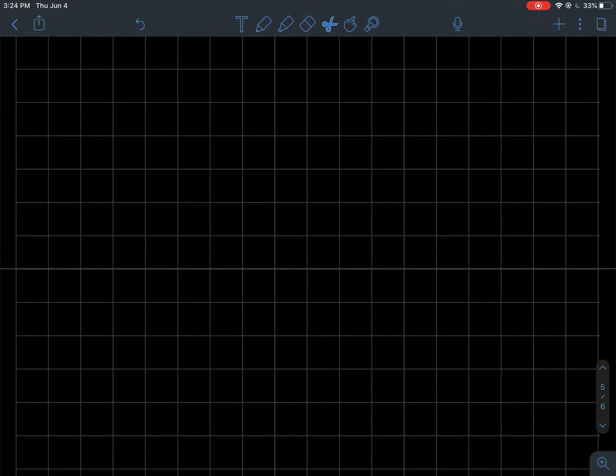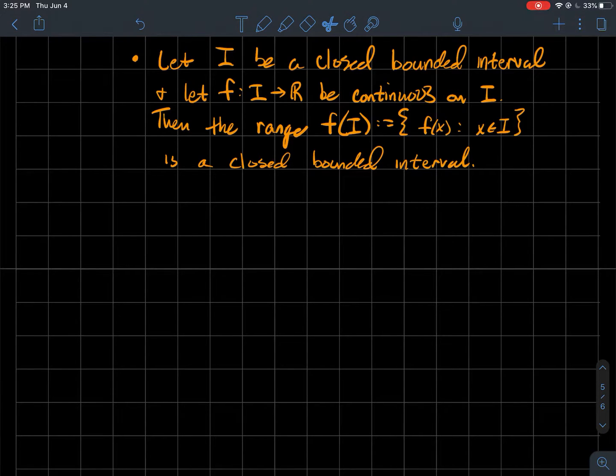All right, this is the third video about how continuous functions behave on intervals of the real line. The first result is if you've got a closed and bounded interval I, and a function f whose domain is I such that f is continuous on I, then the range, which is the set f(I), which is all the outputs of stuff from I, should also be a closed bounded interval.